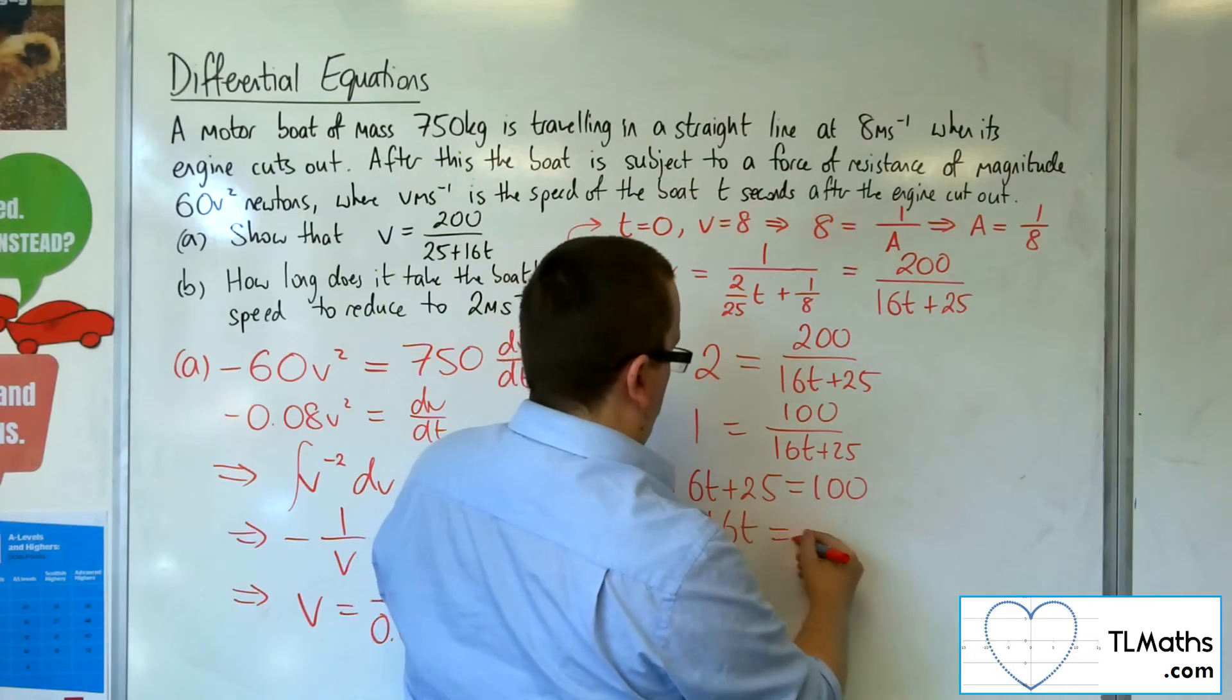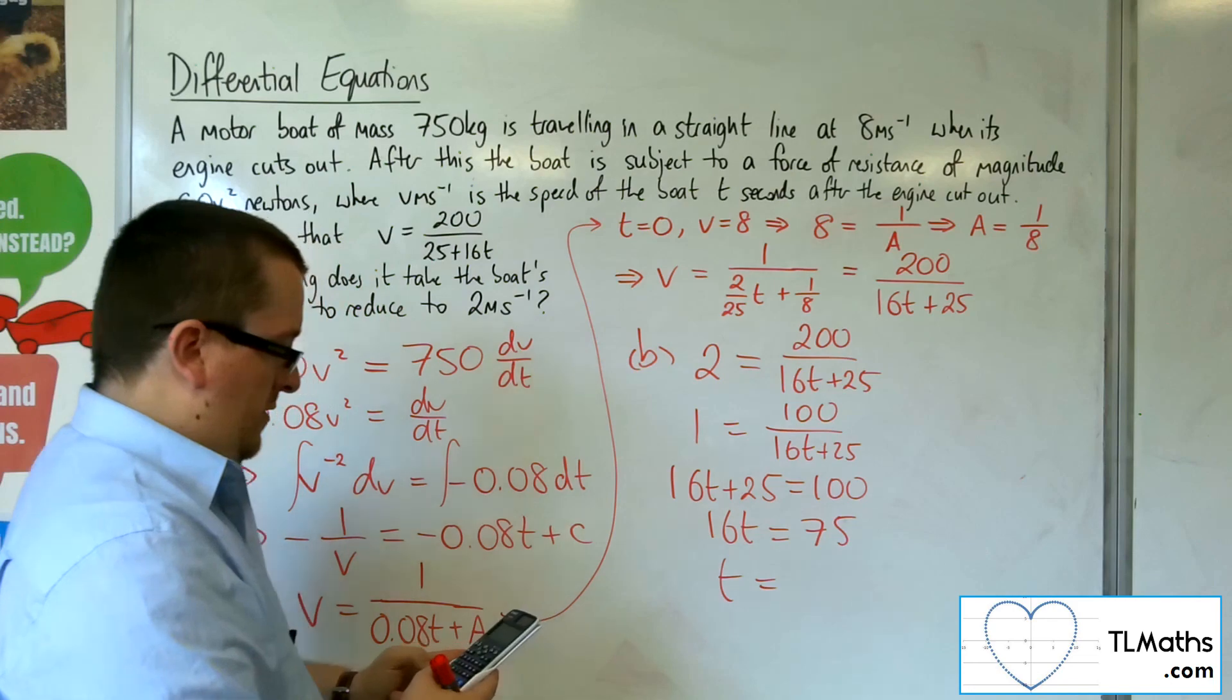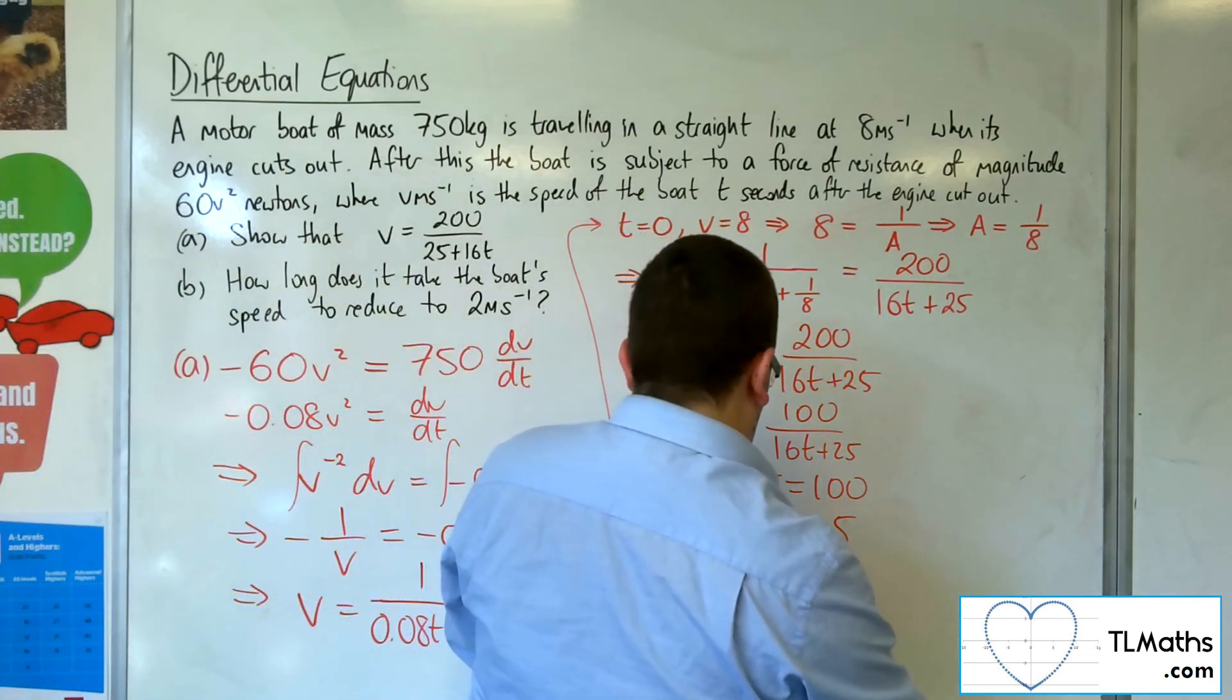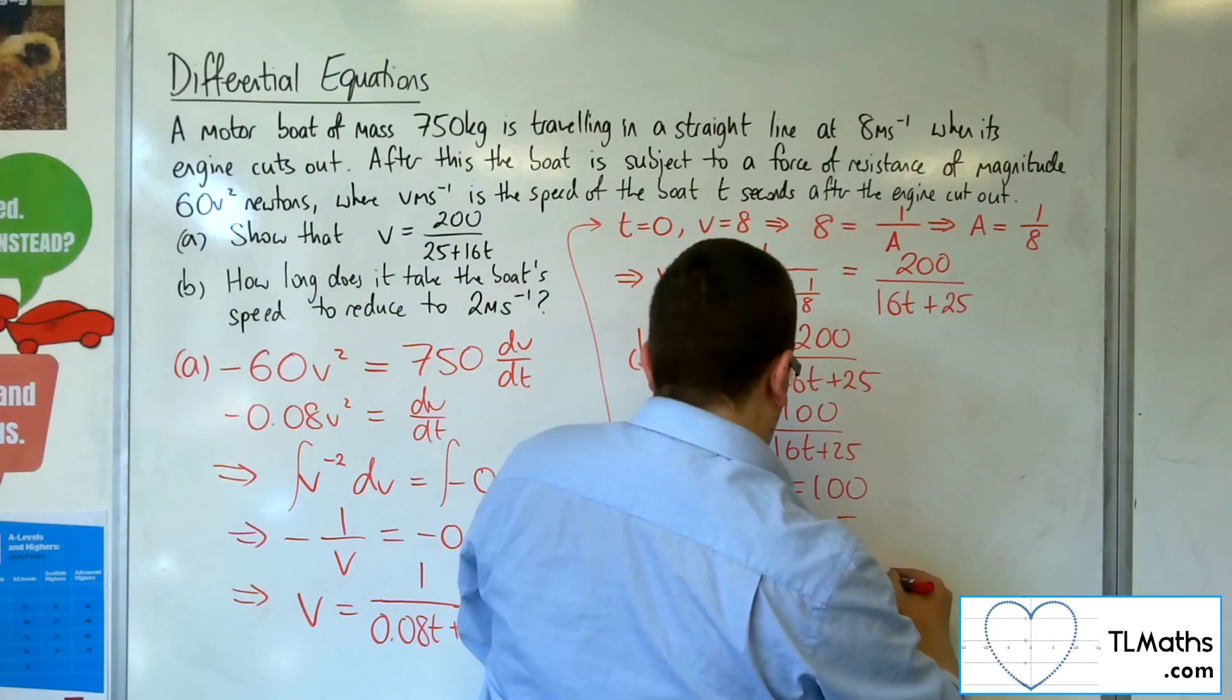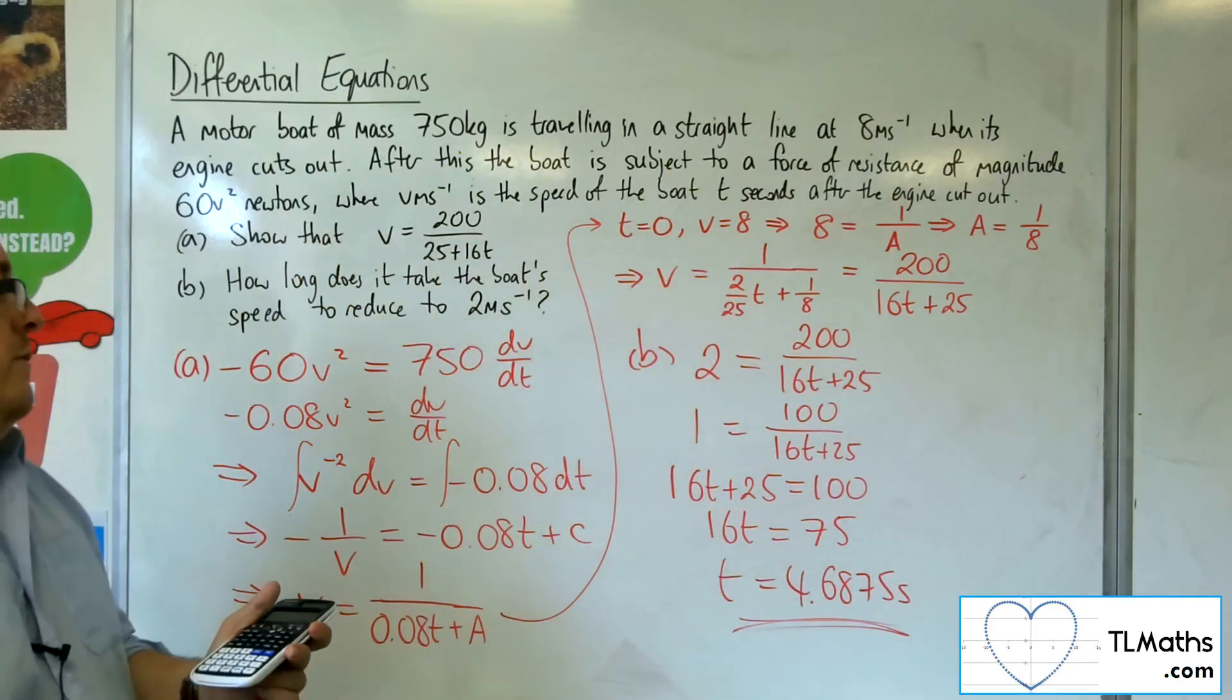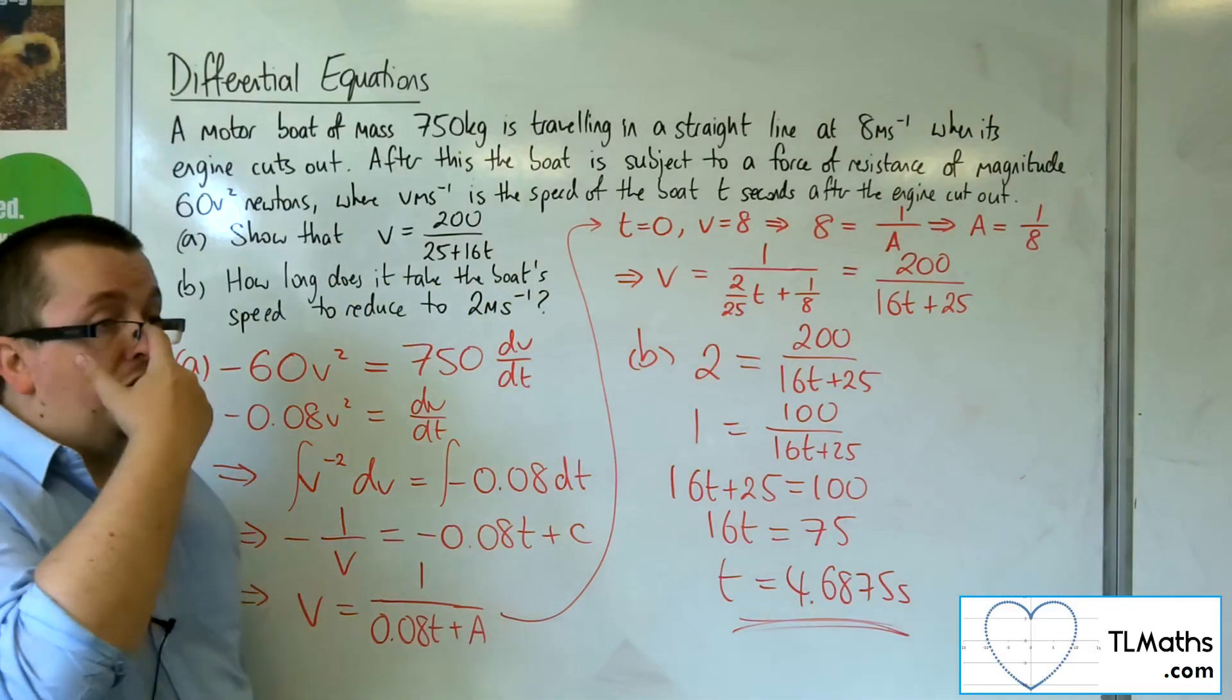Take 25 from both sides, and then divide 75 by 16, and we get 4.6875 seconds. So that is how long it takes for the boat to reduce its speed down to 2 metres per second.